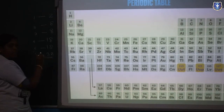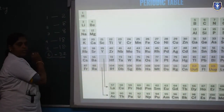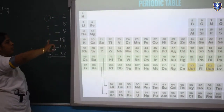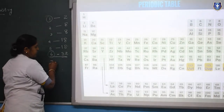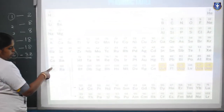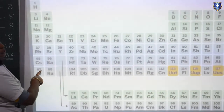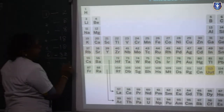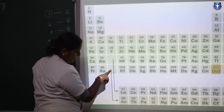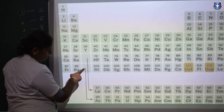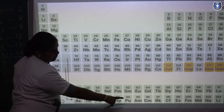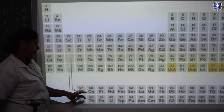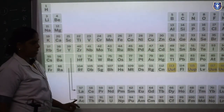The sixth period is known as the longest period; the first period is known as the shortest period. The last period — the seventh — covers atomic numbers 87 to 118, with 32 elements. Actinium (atomic number 89) and the following elements are known as actinides. Lanthanides and actinides together are called inner transition elements.